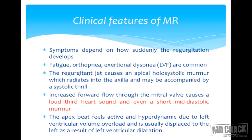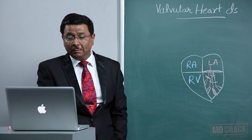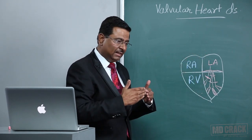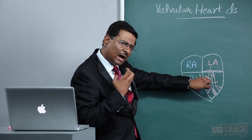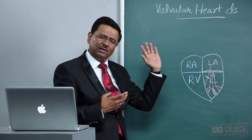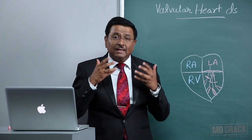Clinical features of mitral regurgitation depend on how suddenly the regurgitation develops. There will be fatigue, orthopnea, and exertional dyspnea due to left ventricular failure. The regurgitation jet causes an apical holosystolic murmur which radiates into the axilla and may be accompanied by a systolic thrill. It is pansystolic or holosystolic because for the entire duration of systole, pressure in the left ventricle is higher than in the left atrium, so blood flows back continuously.